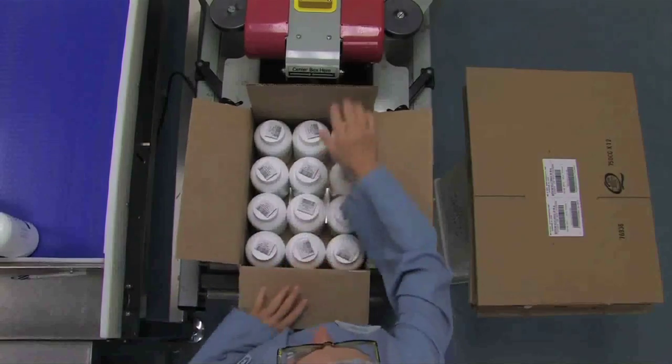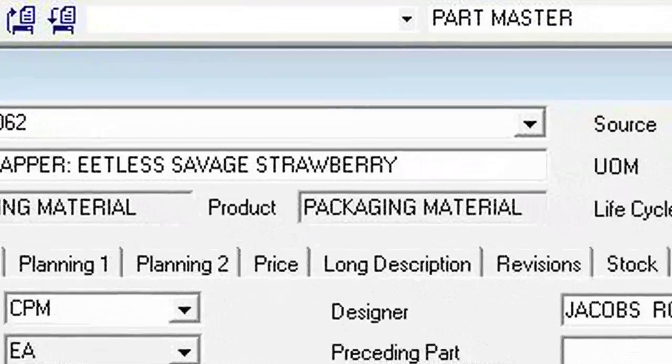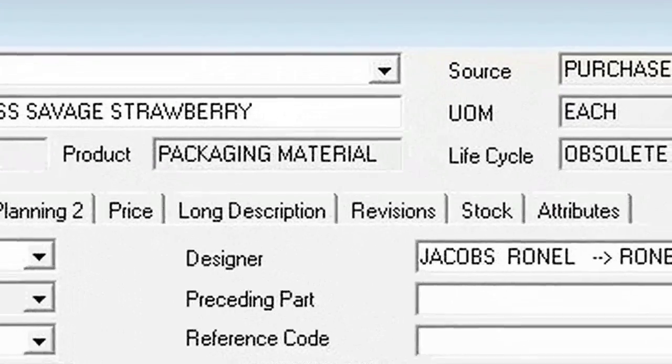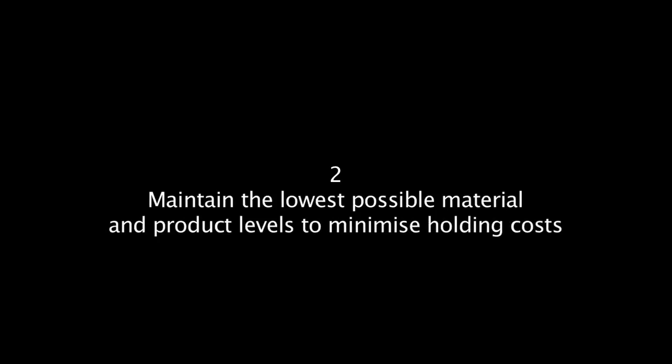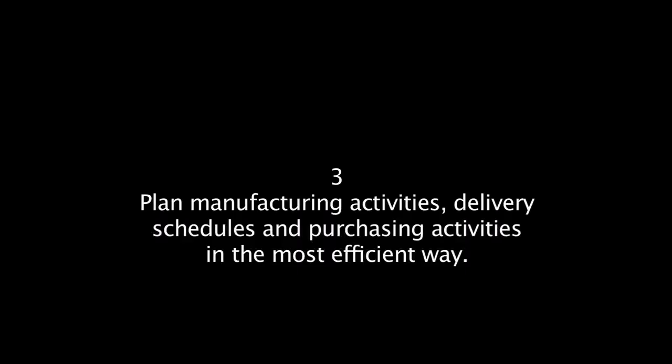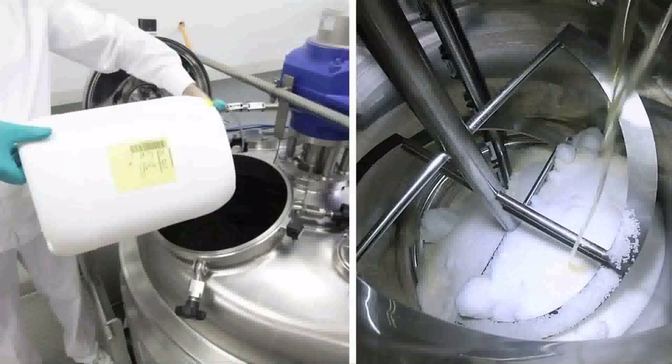An MRP system intends to meet three objectives simultaneously: firstly, to ensure materials are available for production; secondly, to maintain the lowest possible material and product levels to minimize holding costs; and thirdly, to plan manufacturing activities, delivery schedules and purchasing activities in the most efficient way.